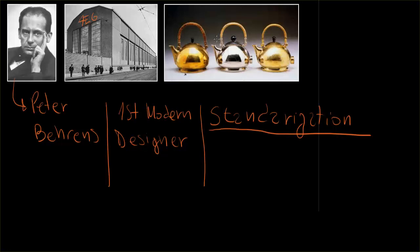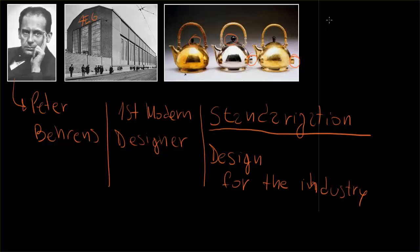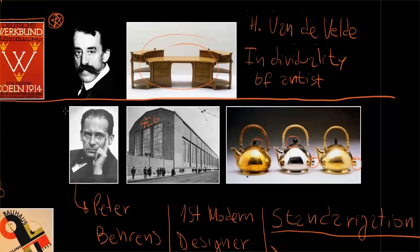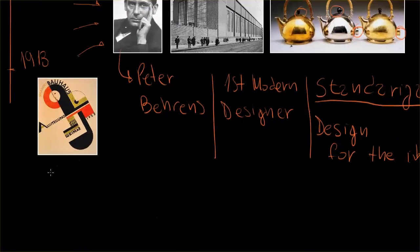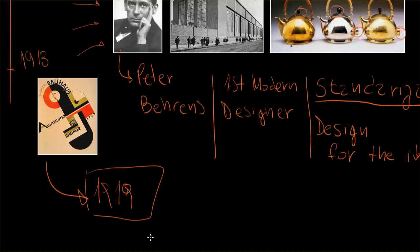Between these two groups, the standardization approach looked much more appealing to German industry and gained more support, so that group eventually won the debate. This would eventually lead to the creation in 1919 of the Bauhaus school in Germany — and that would be the beginning of our next chapter. Thank you very much, I hope you liked it. Bye.